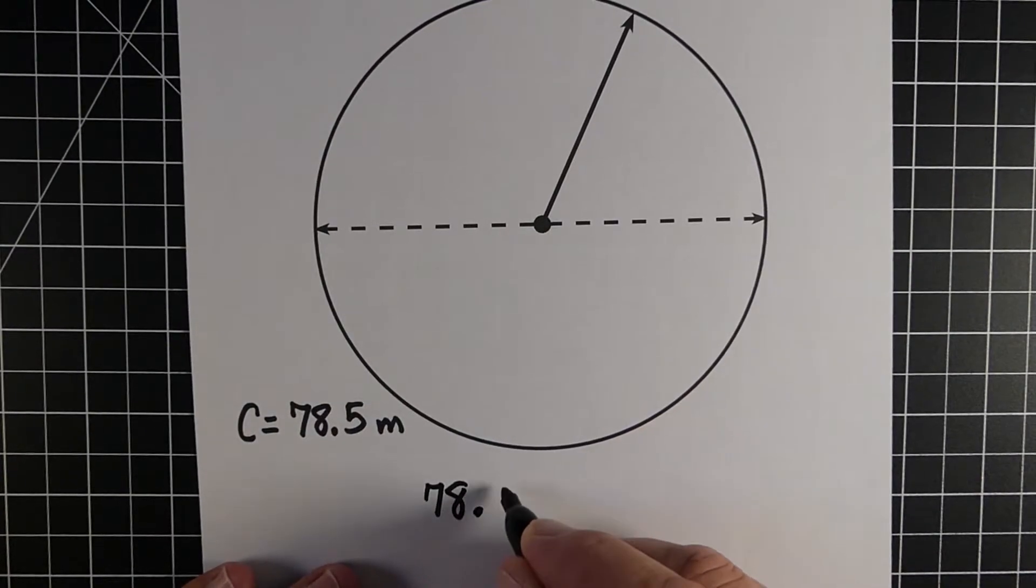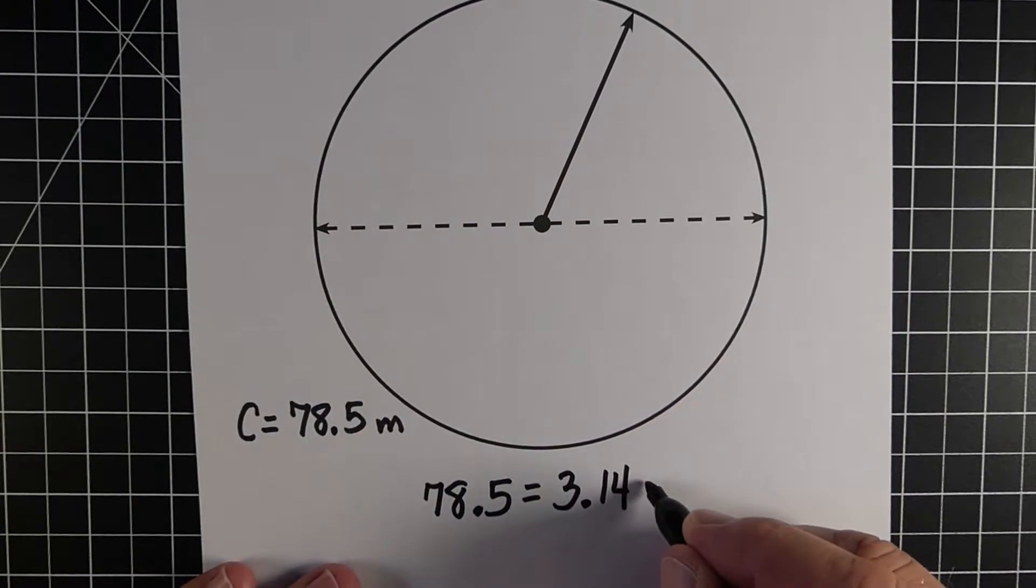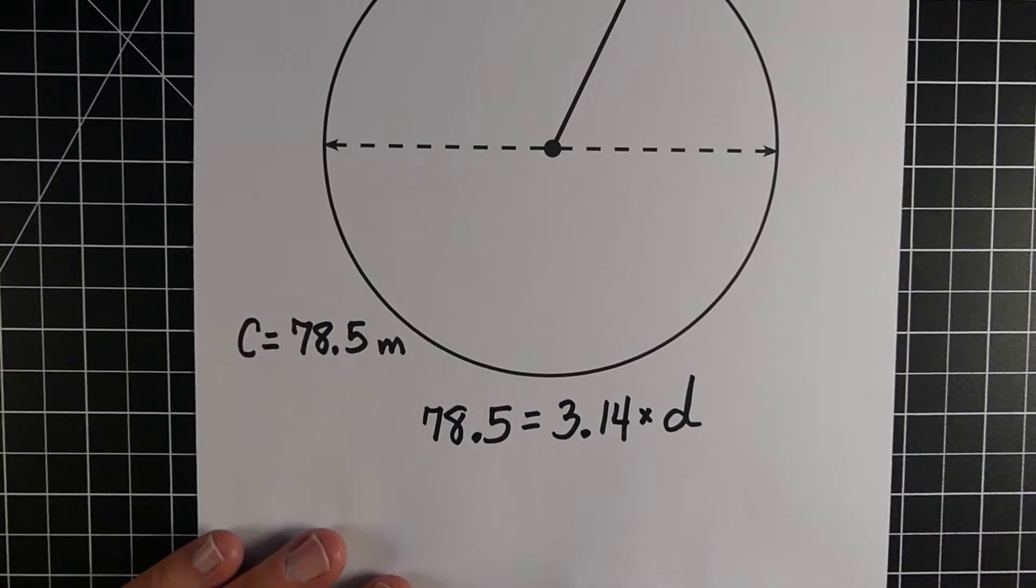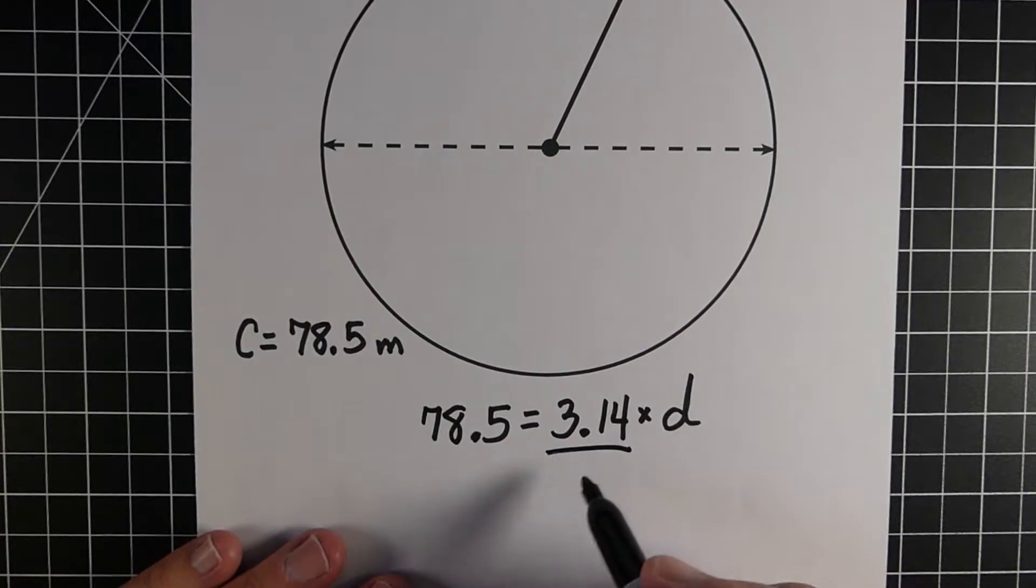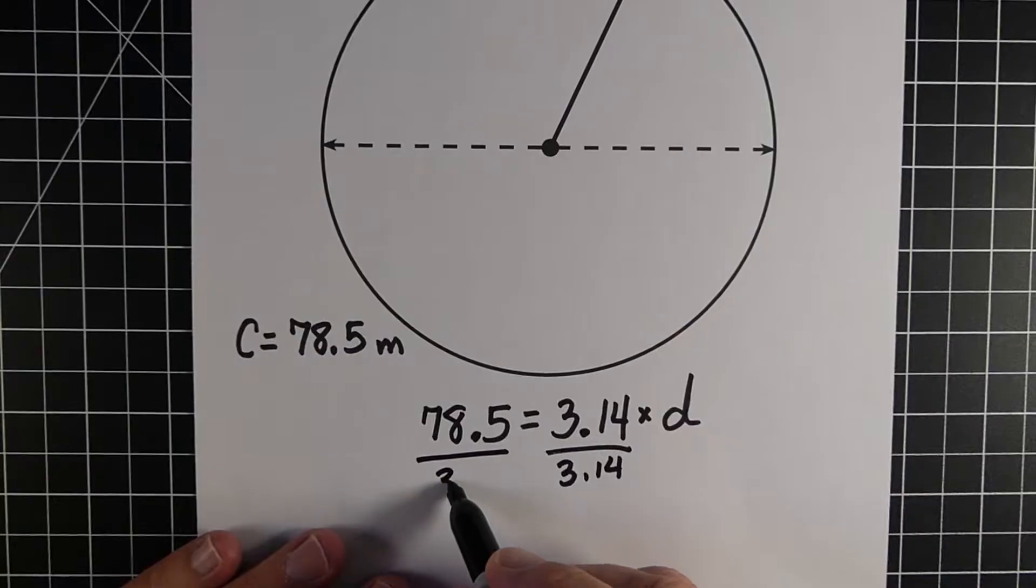And we know to find that area, or that circumference, which is 78.5, it would be pi, 3.14, times our diameter. And so what we're going to do is, exactly like the last one, we're going to divide both sides by 3.14. We're trying to make the 3.14 disappear on the right side.